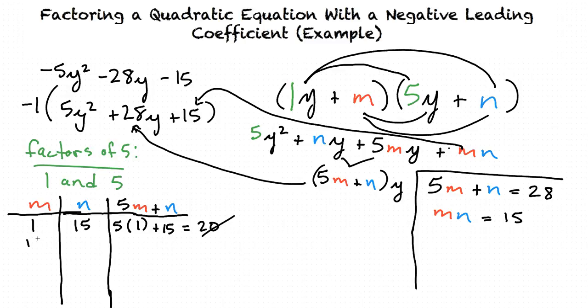We can now try 15 and 1. If we plug 15 in for m, we have 5 times 15 plus 1. 15 times 5 equals 75. 75 plus 1 equals 76. That definitely does not work.